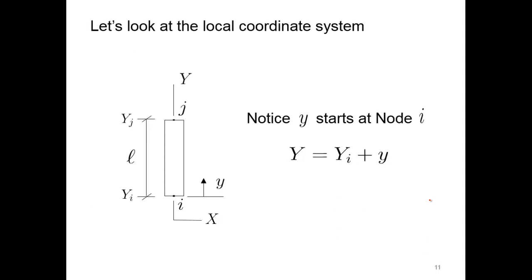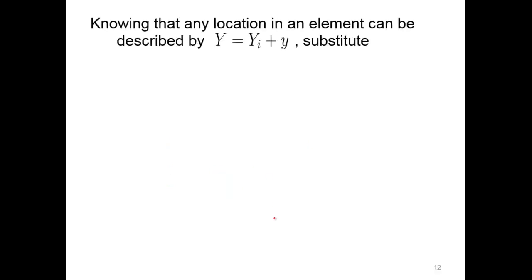Let's look at the local coordinate system. We notice that y starts at node i — that's the local coordinate system. Over here in the global system for capital Y, the location at any point within our element is equal to y sub i plus y (the local coordinate), which gives us any point within our element. That's where that relationship comes from.